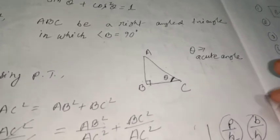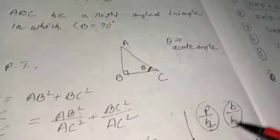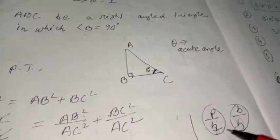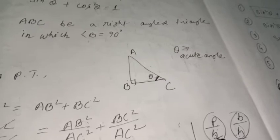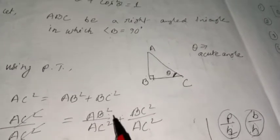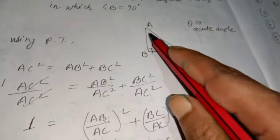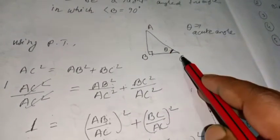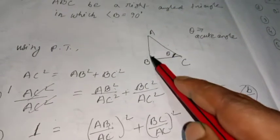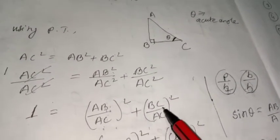If you apply Pythagoras theorem, you get AC² = AB² + BC². Now, since sin θ = p/h and cos θ = b/h, both have the hypotenuse (AC) as denominator. So divide each term of the Pythagorean equation by AC². You get AC²/AC² = AB²/AC² + BC²/AC², which gives 1 = (AB/AC)² + (BC/AC)².